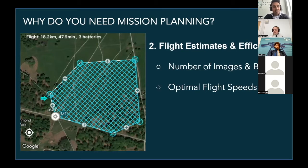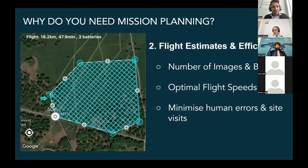The second estimate mission planning helps you identify is the optimal flight speed. In the drone world, flying as fast as possible is not always great — if you're flying really fast, your camera cannot keep up and you miss pictures during the flight. But you also don't want to fly too slow because you don't want to be on site all day. Finding that sweet spot is really important, and mission planning allows you to identify it.